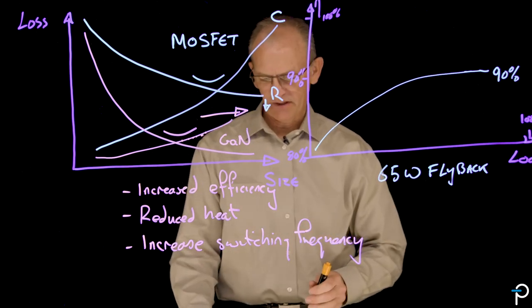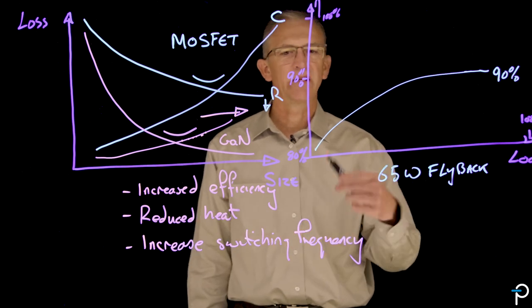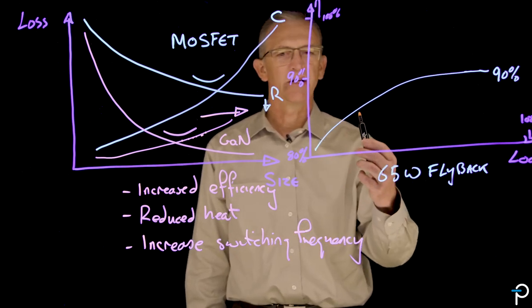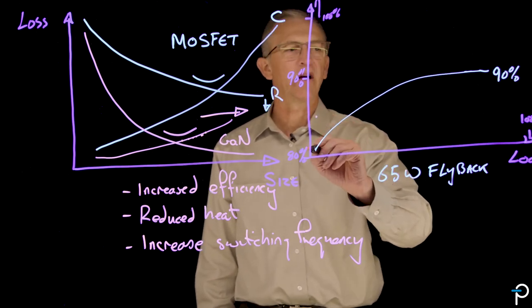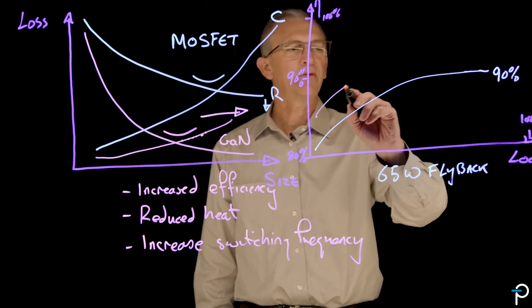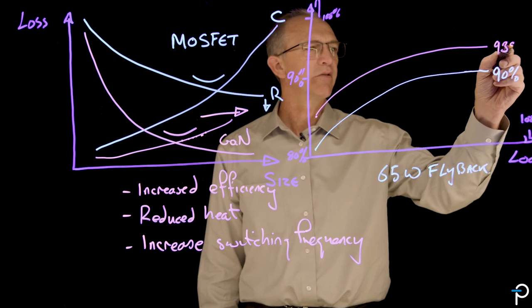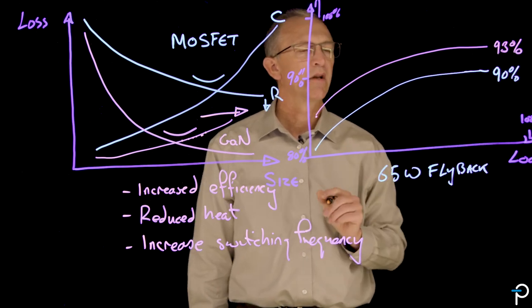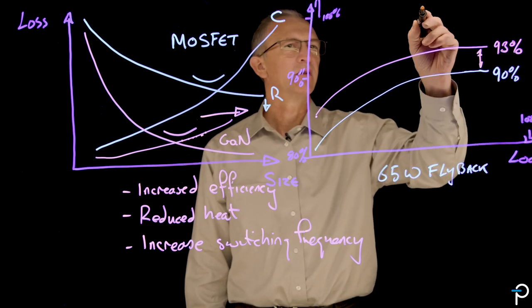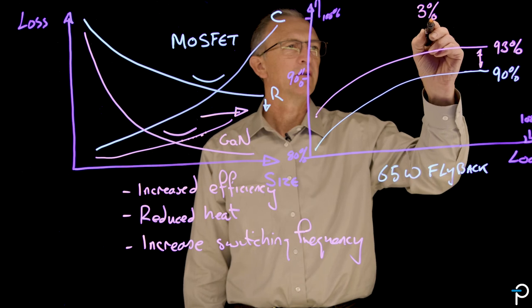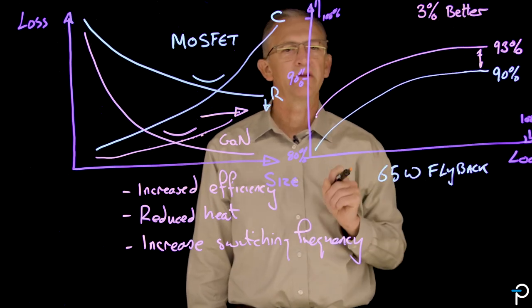A gallium nitride-based power supply, particularly one that's mounted inside an inner switch product that has a tuned switching mechanism, it's going to start off higher in the light load. And in the full load, it's also going to be higher, as high as 93%. So what we're looking at here is a 3% improvement in efficiency just due to the use of gallium nitride.